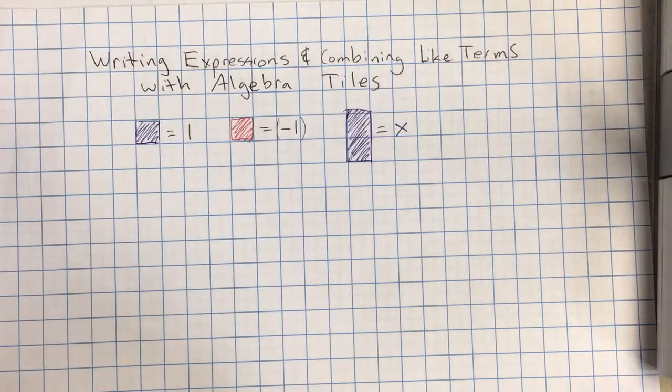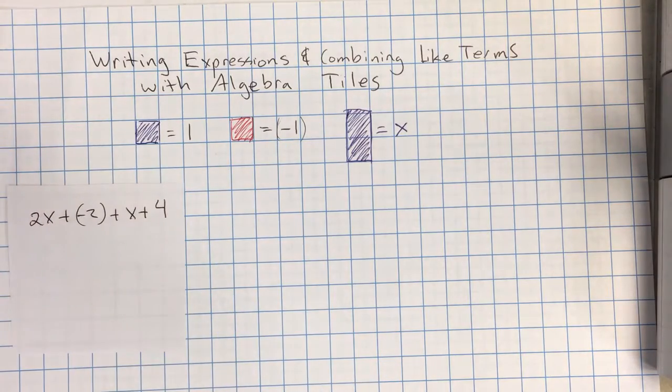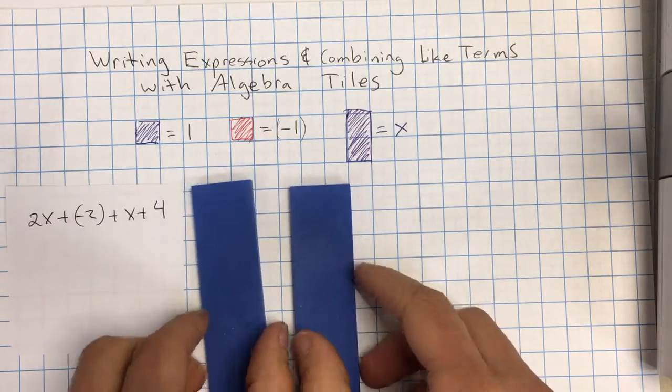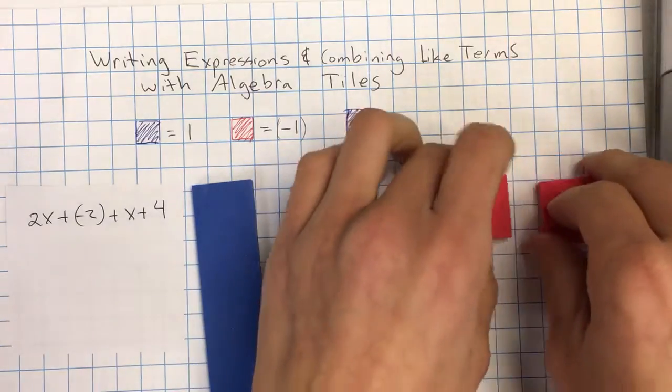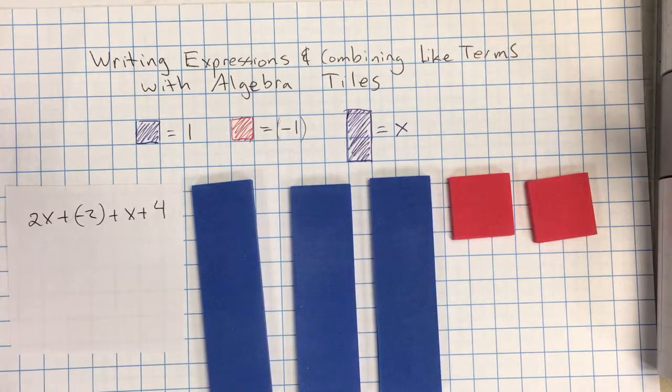Let me show you one other example, slightly bigger one. Now we've got a bunch of different stuff going on here. So we've got 2 x's, so I'm going to put 2 x's, plus negative 2. So I'm going to put 2 negatives, plus another x, plus positive 4.